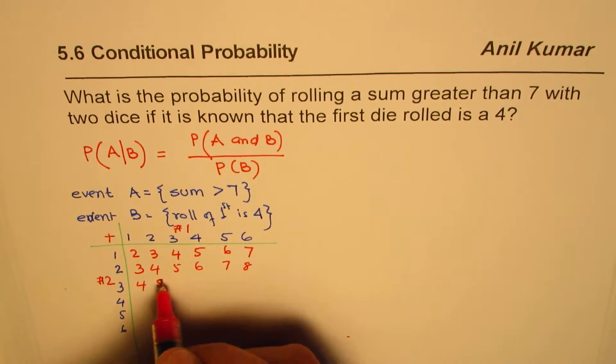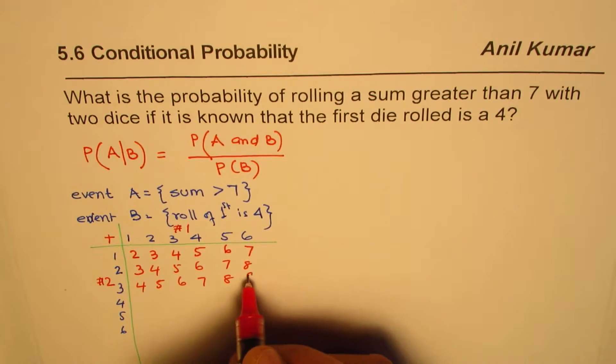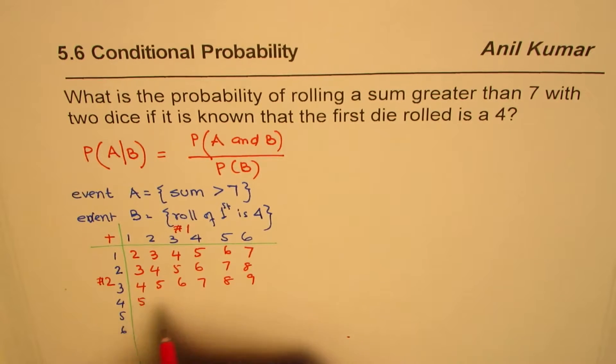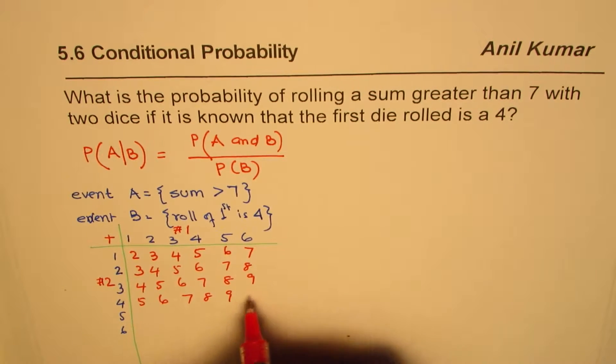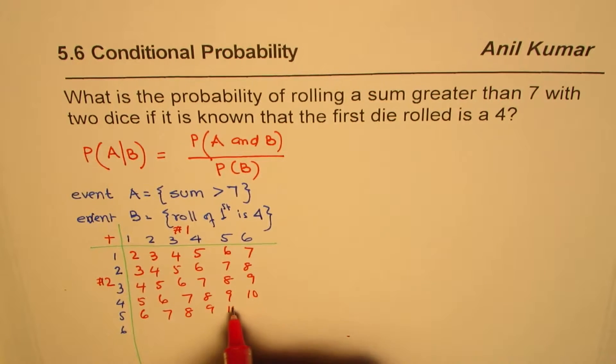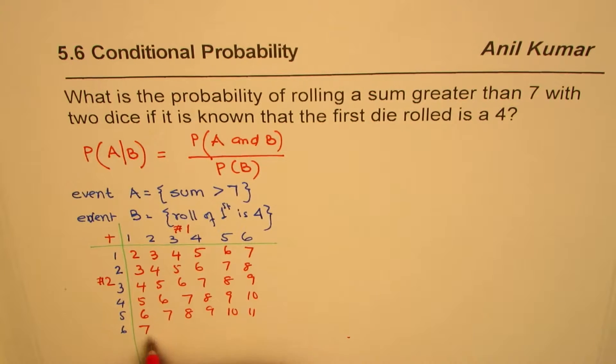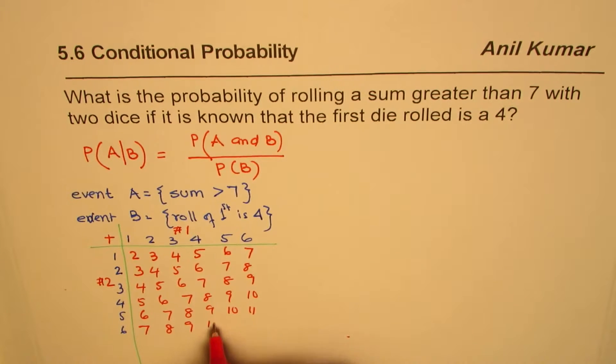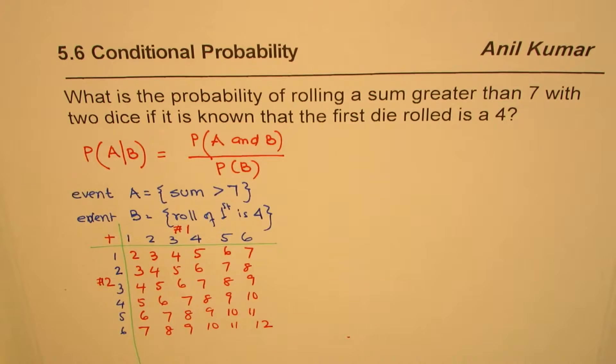3 plus 1 is 4, 5, 6, 7, 8, 9, 10, 11. 6 plus 1 is 7, 8, 9, 10, 11, and 12. So that is what we get.